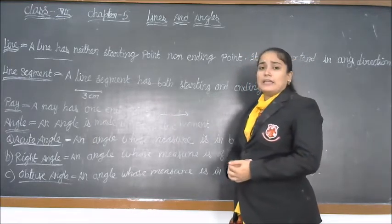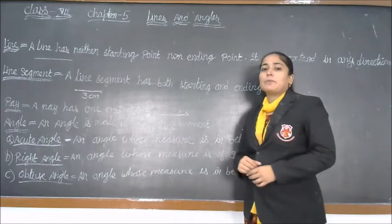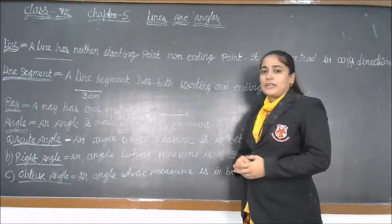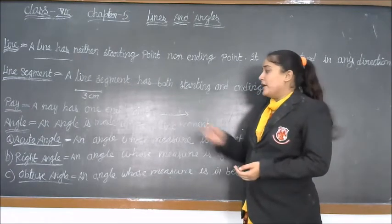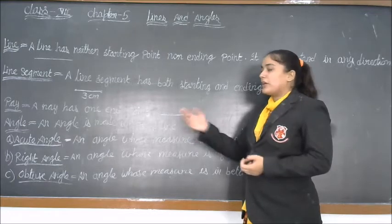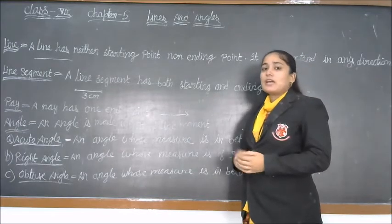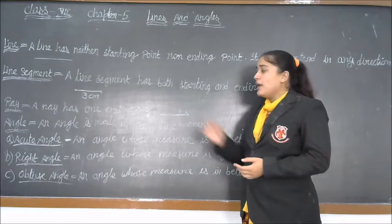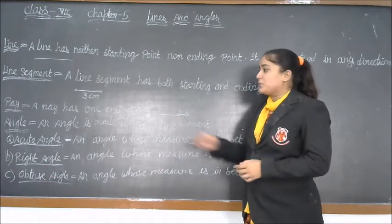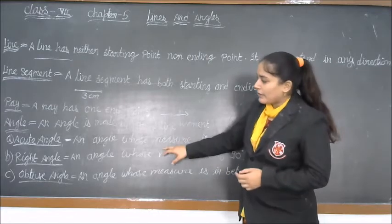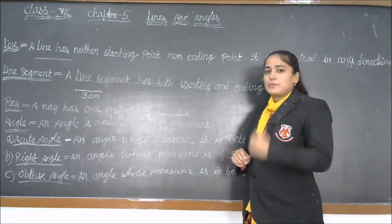Now, angle. An angle is made up of two line segments. If we have only one line segment, we cannot draw an angle; if we have two line segments, we can draw an angle. Angles are of three basic types: acute angle, right angle, and obtuse angle.